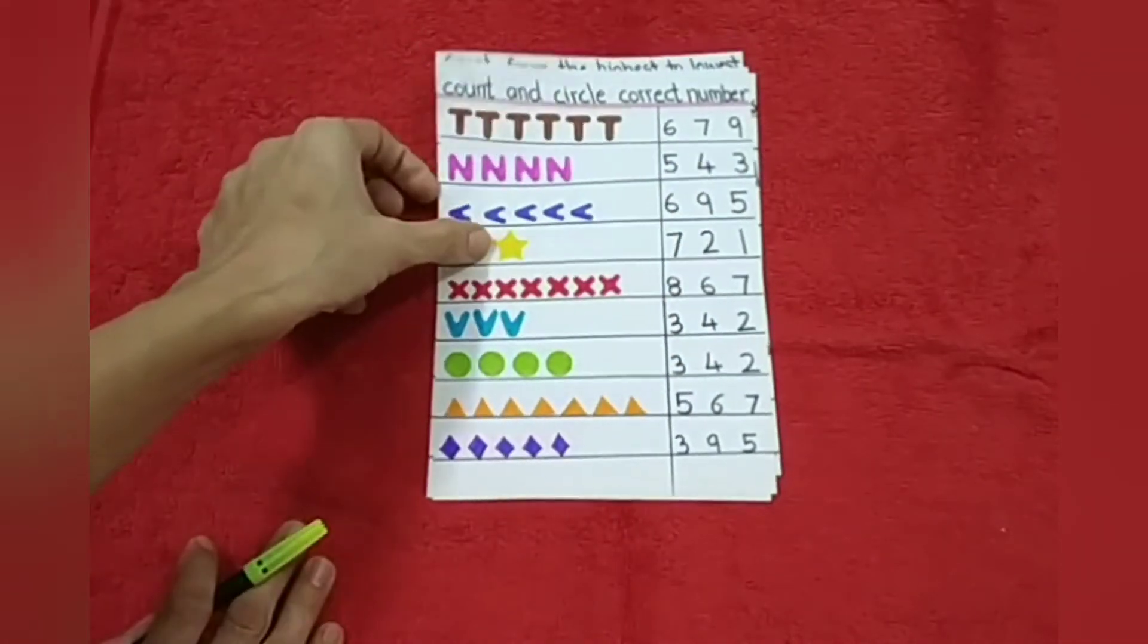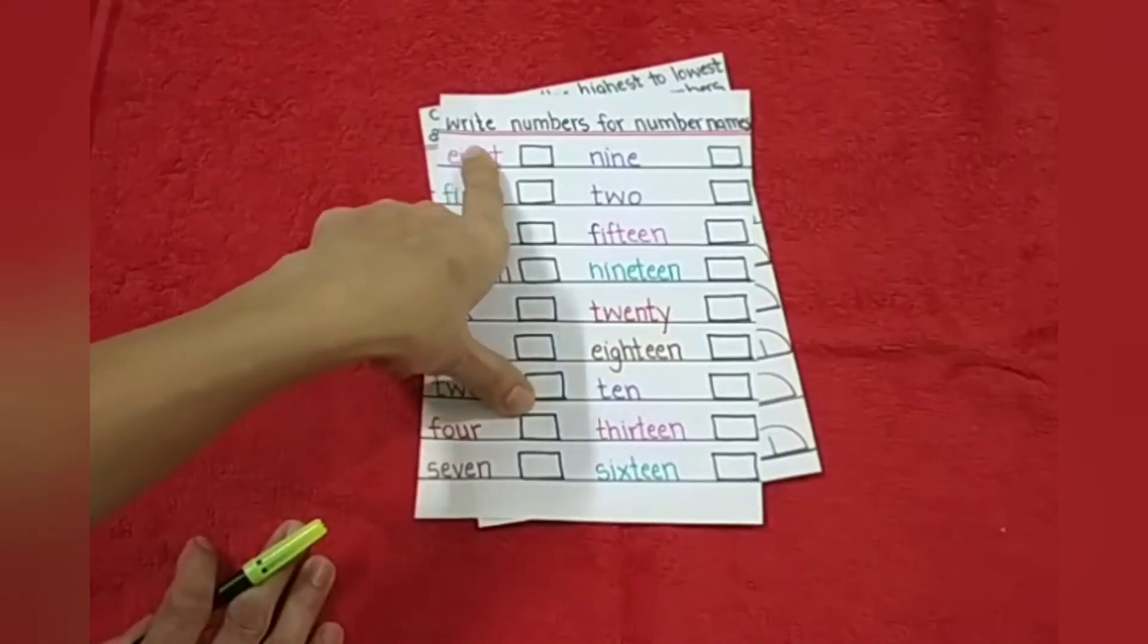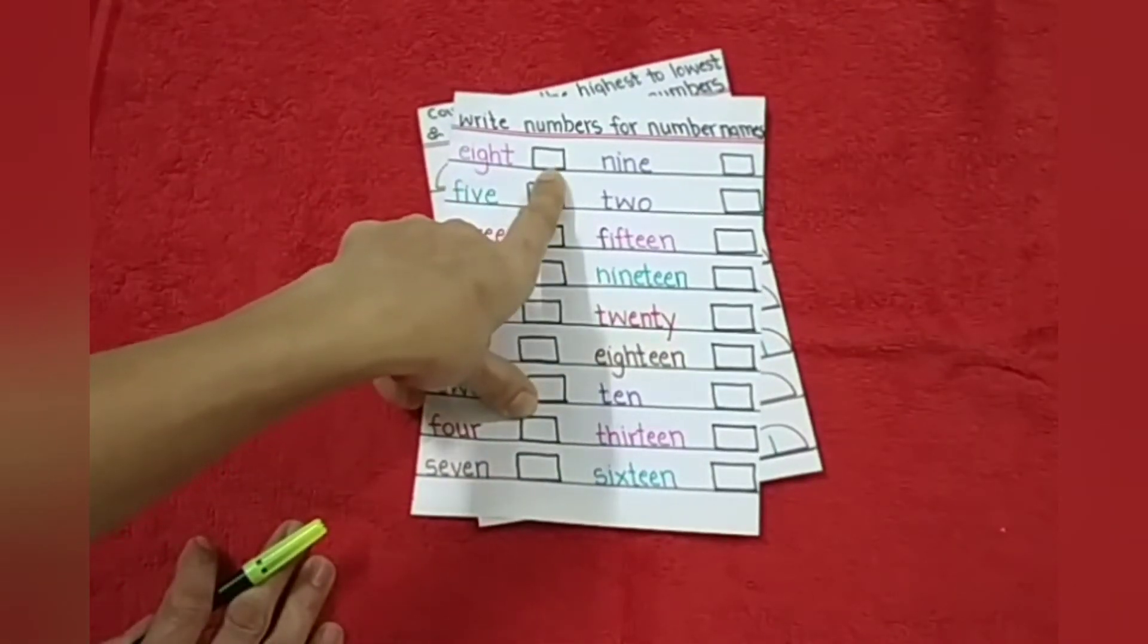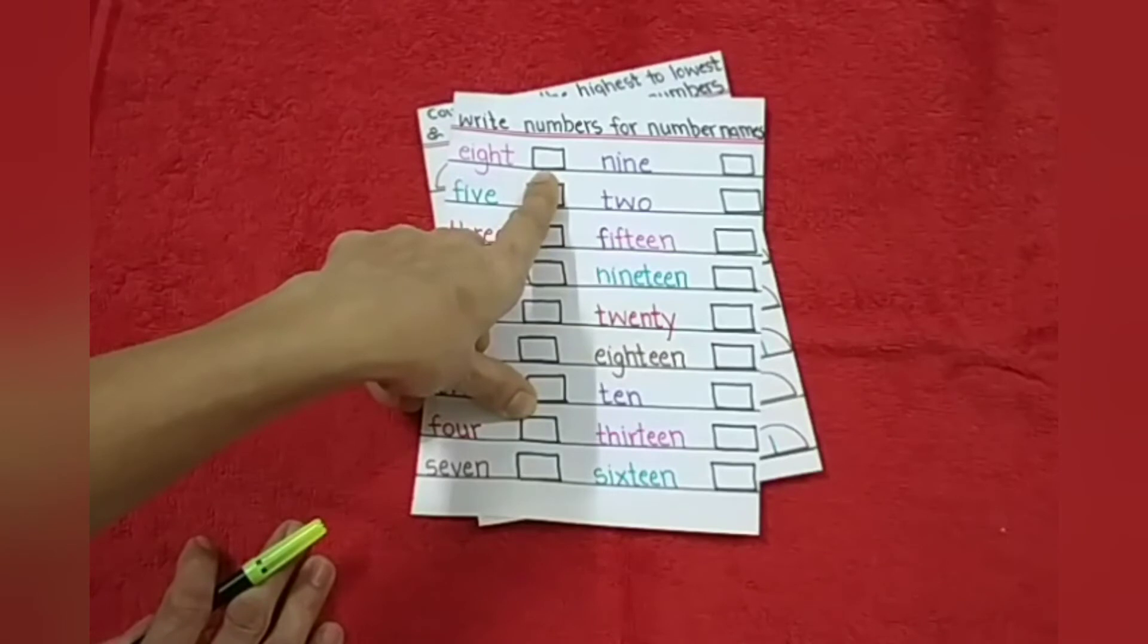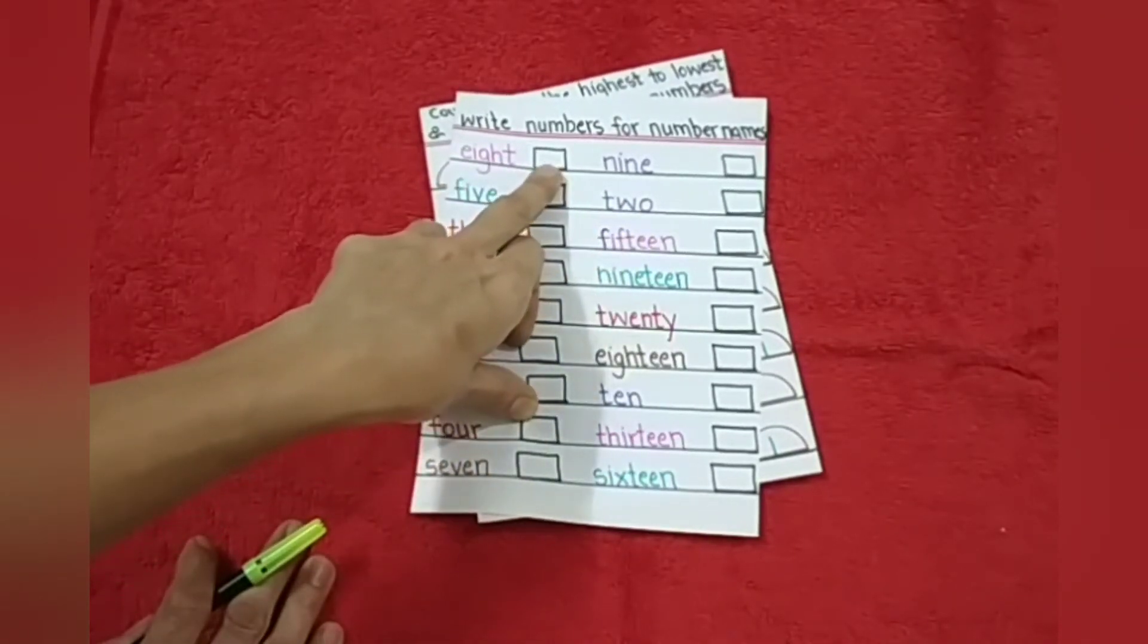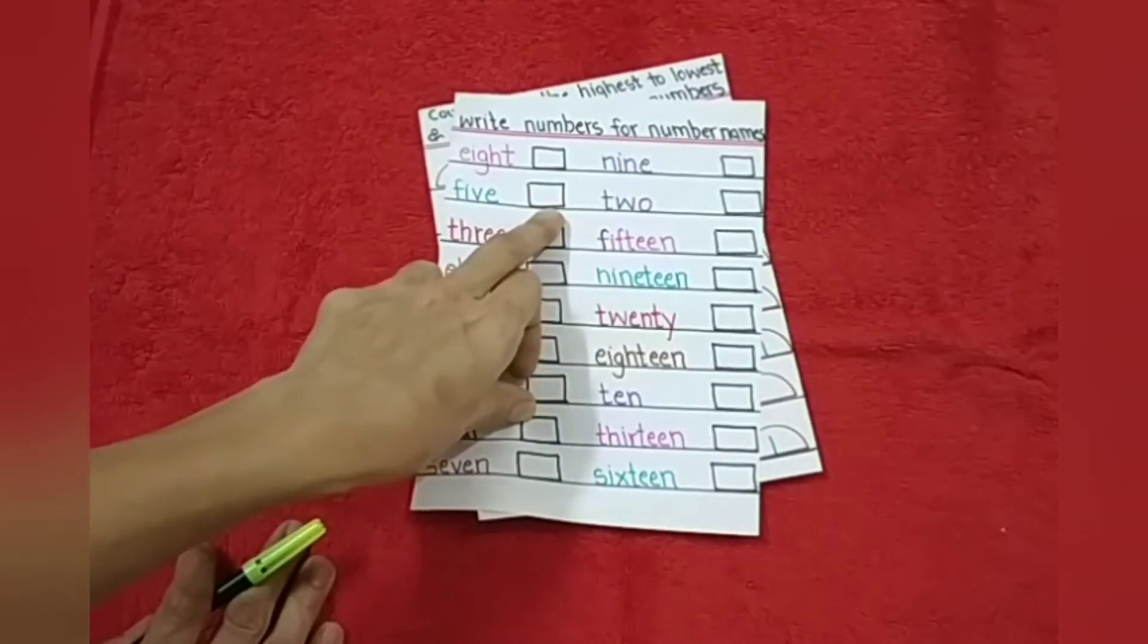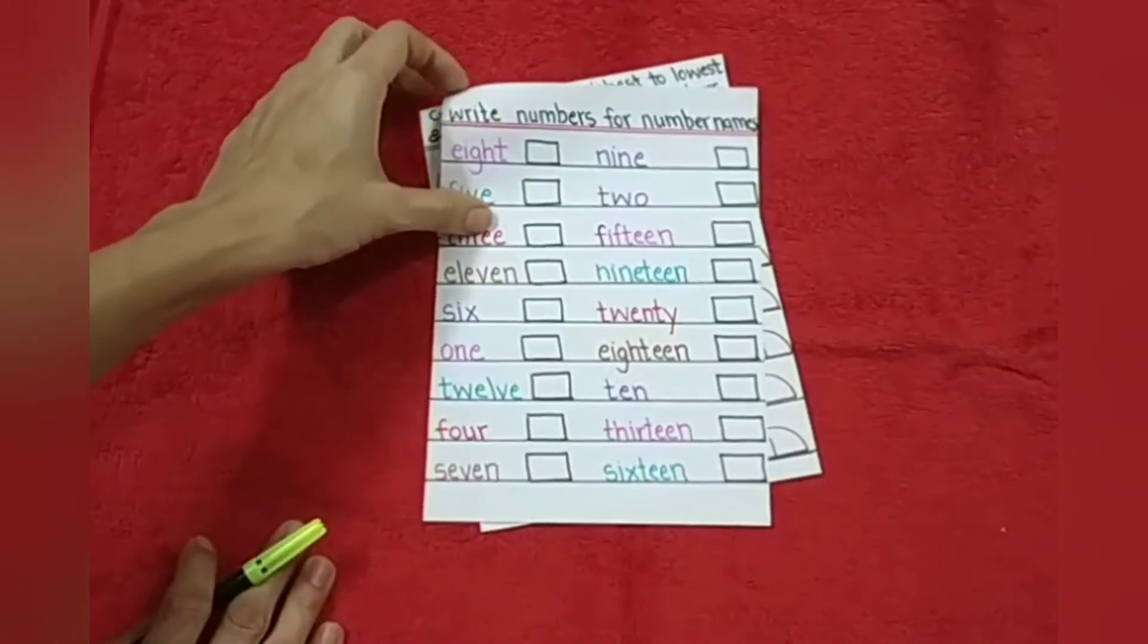Next is, they have to read the number name and they have to write the correct number in the box. For example, 8. They have to write here number 8. For 5 spelling, they have to write number 5. This way they will do this worksheet.